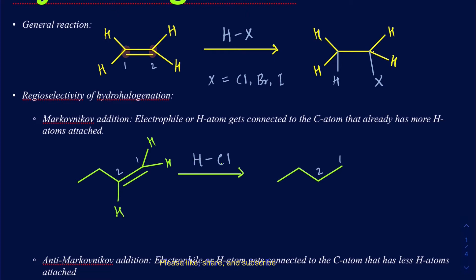This particular addition is called Markovnikov's addition. Markovnikov's rule states that the electrophile or the hydrogen gets connected to the carbon atom that already has more hydrogens attached to it in the beginning. So the hydrogen comes to carbon one and the chlorine comes to carbon two. This describes the regiochemistry — specifically the regioselectivity — of these hydrohalogenation reactions. Markovnikov's rule applies whenever you're adding a binary acid onto an alkene.